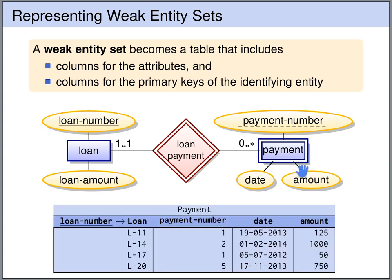The table payment has columns: date, amount, payment number, plus the primary key of the identifying entity set. The identifying entity set is loan, and the primary key of loan is the loan number. So we have a column with the loan number, which is a foreign key that references loan.